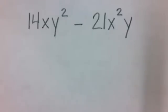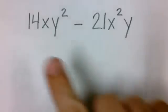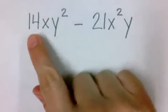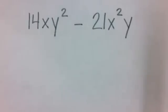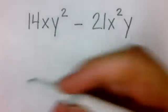We're going to factor by the greatest common factor here. So we're looking for the biggest number that divides evenly into 14, as well as 21. That would be seven.